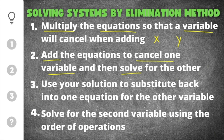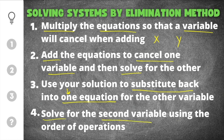After that, you use your solution to substitute back into one equation for the other variable. Once you get your solution, you'll take it and substitute back into one equation — you can pick whichever one you think will be easier to solve. After substituting, you will solve for the second variable using the order of operations. Finally, your answer has to be an x and y coordinate, so you'll get x equals a number and y equals a number — that's your (x, y) coordinate solution to the system.